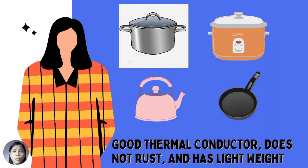You may cook rice in an aluminum pot or in a rice cooker. Aluminum is used in making cookware like kettle, rice cooker, casserole, and frying pan because it is a good thermal conductor. It does not rust and has light weight. These properties are important for everyday use in cooking foods.